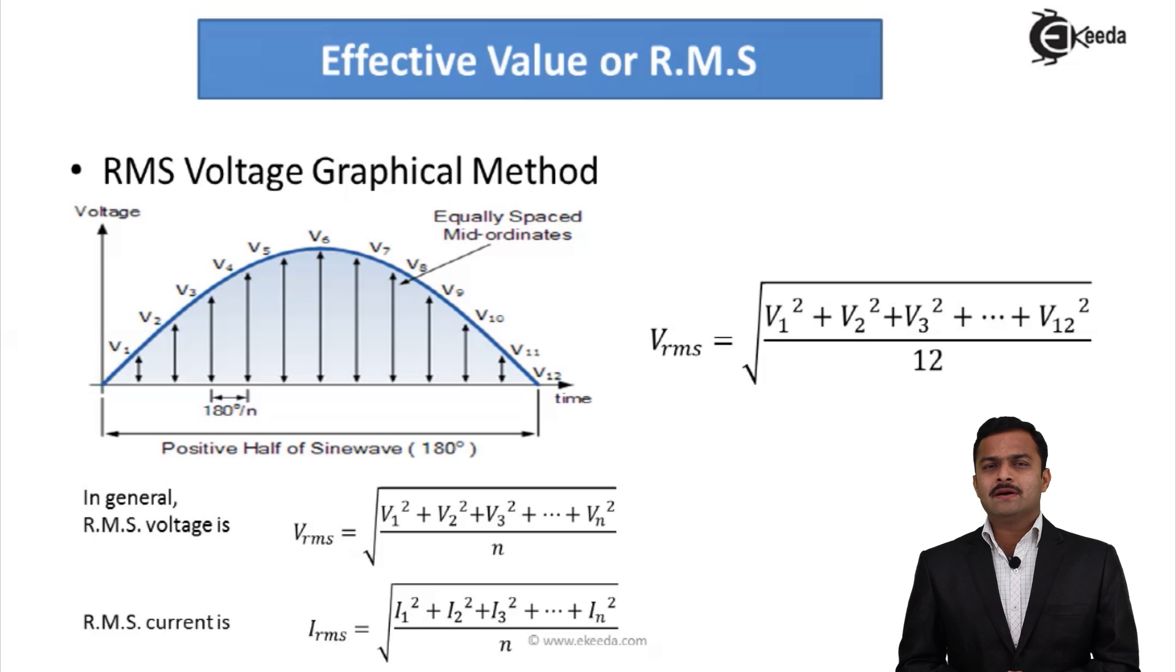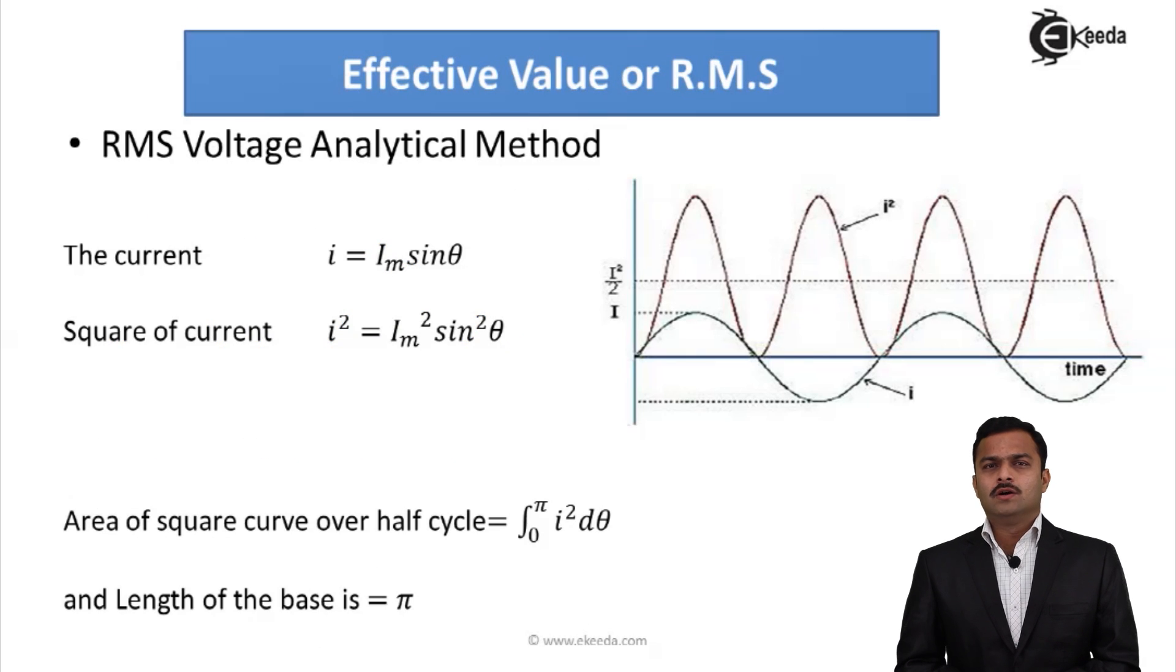Suppose I want to find out RMS value by another technique which is the analytical method. See how we are going to do that. The current is given by I = I_m sin θ, a standard AC current waveform. Then let us square it. So I get I² = I_m² sin² θ.